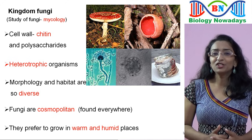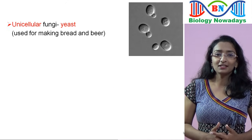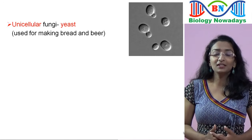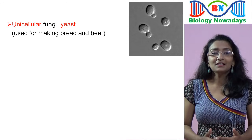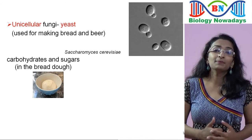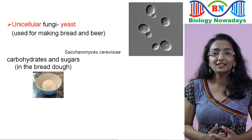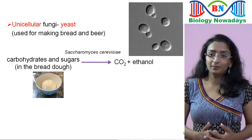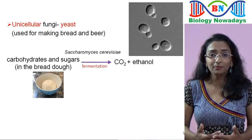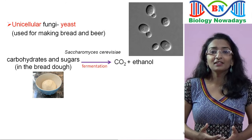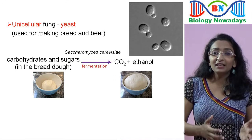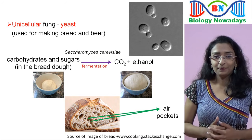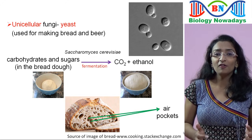Even though Kingdom Fungi is generally considered to have multicellular eukaryotes, some members like yeast are unicellular. Yeast are used in making bread and beer. The yeast Saccharomyces cerevisiae, also known as baker's yeast, converts the carbohydrates and sugars in the bread dough into carbon dioxide and ethanol by fermentation. The carbon dioxide forms bubbles inside the dough and as a result the dough will rise. When we bake this dough with air bubbles, the yeast will die and the air pockets will be set, giving the bread a soft and spongy texture.